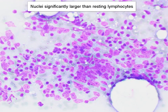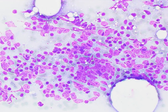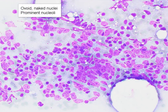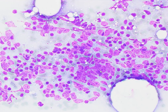Moving around, for example in this area, many of the nuclei appear naked. They are quite ovoid and irregular, and we can appreciate very prominent nucleoli. There are not that many lymphoglandular bodies in the background, but these malignant cells are closely associated with lymphocytes.